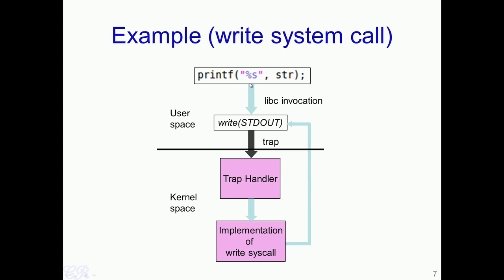Printf is present in libc and it results in a particular function in the user space known as write to be invoked, and this function would then invoke a system call called write with a parameter called stdout. Stdout is a special parameter which essentially tells the operating system that the string provided by printf should be displayed on to the standard output — that is, the screen. The write is a system call which causes a trap to be triggered, and this trap will result in a trap handler in the kernel space to be executed. The trap handler would then invoke a function corresponding to the write system call, which will be responsible for actually printing the string onto the screen. After the write system call completes, execution is transferred back to the user space and the process continues to execute.